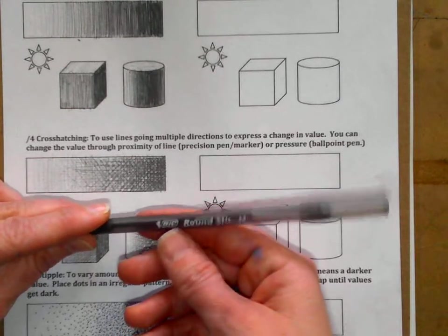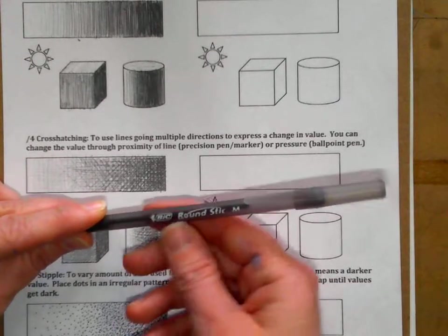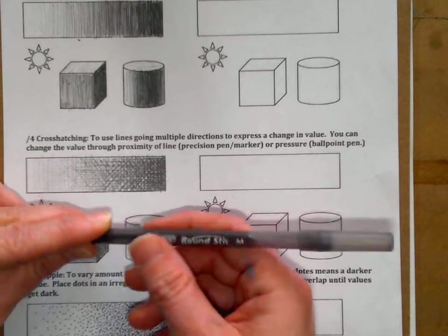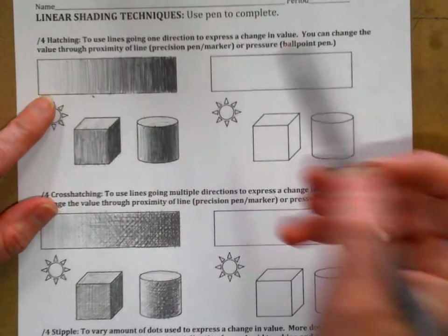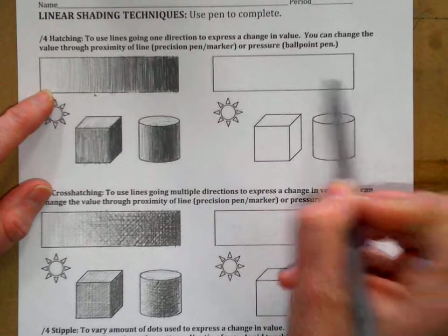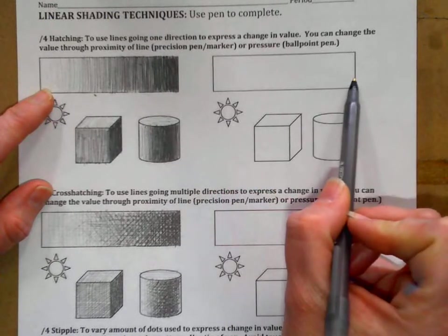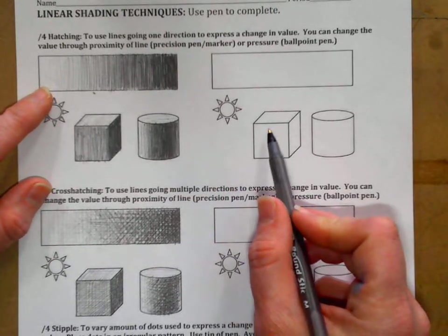Also, some people like certain brands, so you can experiment with different pens that you have. We're going to start first with just the hatching. I want you to practice the basic technique of hatching on the value scale, and then you'll have your geometric solids.